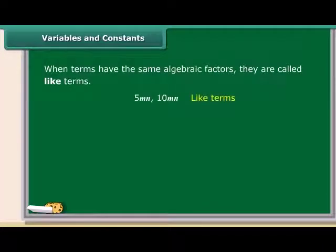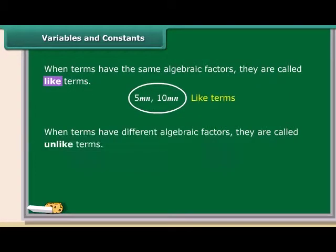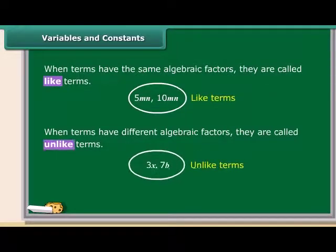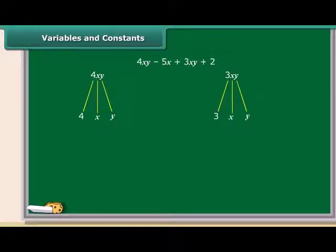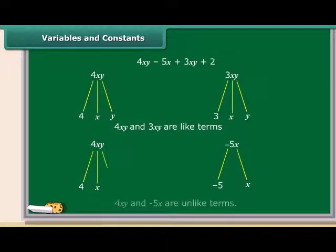When terms have the same algebraic factors, they are called like terms. And when terms have different algebraic factors, they are called unlike terms. Let us see an example. We have an expression 4xy minus 5x plus 3xy plus 2. Now, look at the terms 4xy and 3xy. The factors of 4xy are 4, x and y. Likewise, the factors of 3xy are 3, x and y. So both the terms have same algebraic factors, which means 4xy and 3xy are like terms. On the other hand, the terms 4xy and minus 5x have different algebraic factors, so they are unlike terms.